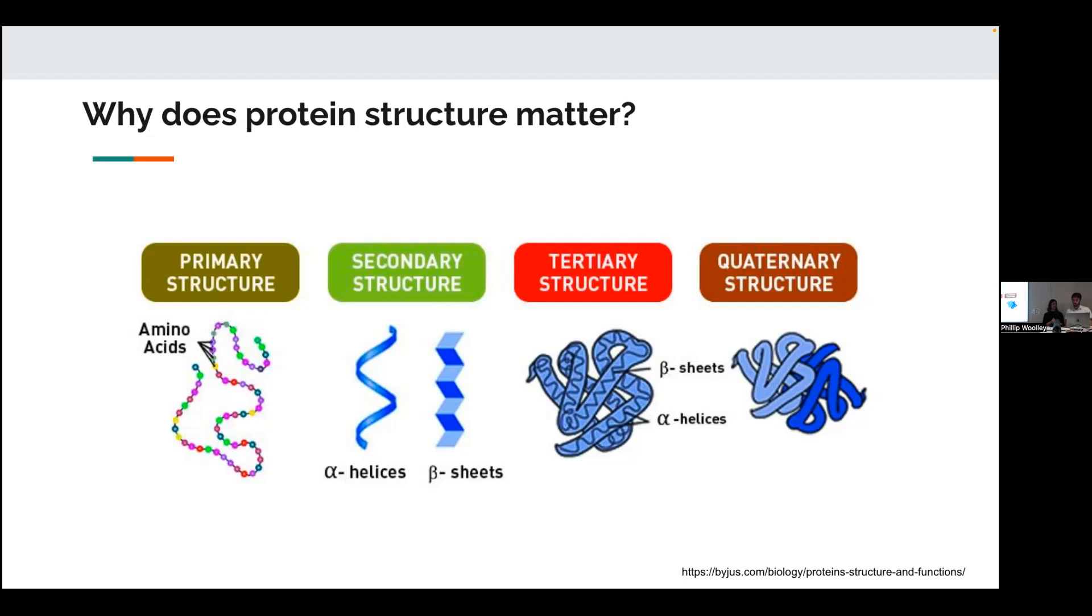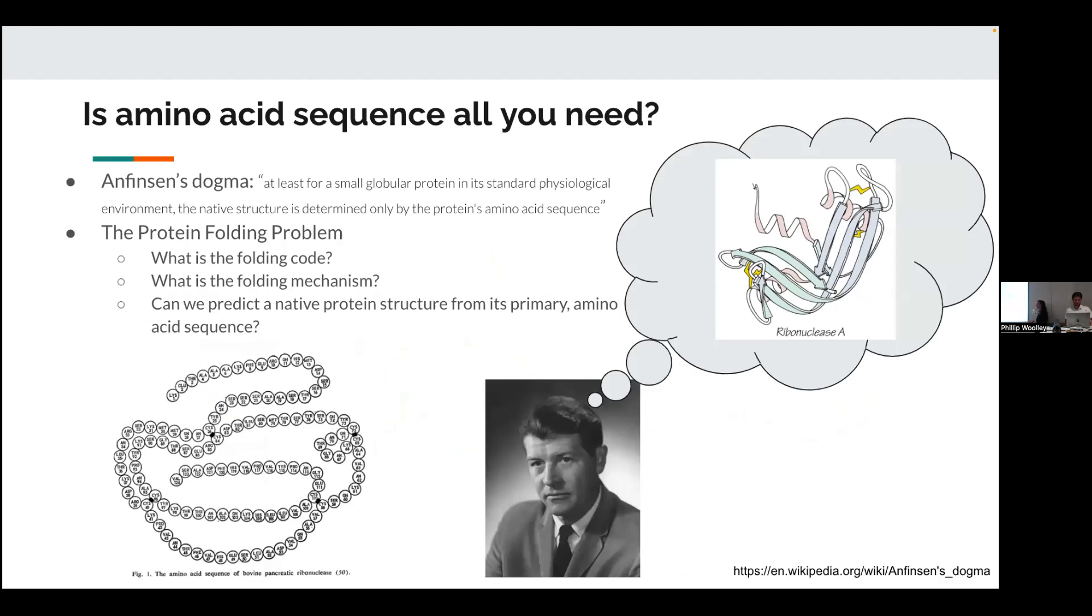So one of the big questions has always been, is an amino acid all you need to actually predict protein structure? And this question really came about, or like started gaining steam 50 years ago. And it was with this guy right here, his name was Anfinsen. And he, with two other scientists, won the Nobel Prize for their work on ribonuclease A. And he really introduced the protein folding problem and had a dogma. And his thought was, at least for a small globular protein in its standard physiological environment, the native structure is determined only by the protein's amino acid sequence.